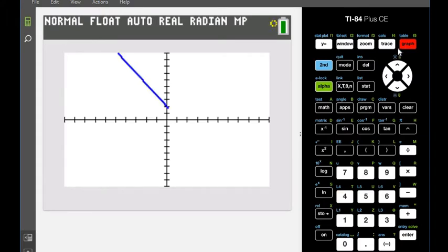So when I graph this, it's going to put the graphs of both equations on there, and we can see that they intersect here.